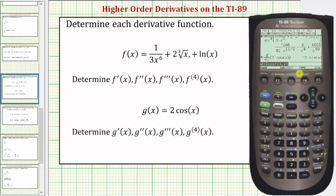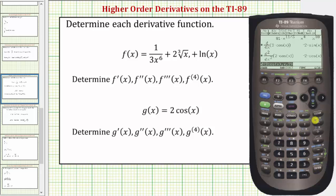Now to find the second derivative, we'll edit this entry by placing a comma two after the x — right arrow, left arrow, comma two, Enter. The second derivative, g double prime, is equal to negative two cosine x. Now we'll change the two to a three — right arrow, left arrow, backspace, three, Enter. G triple prime of x, or the third derivative, is equal to two sine x.